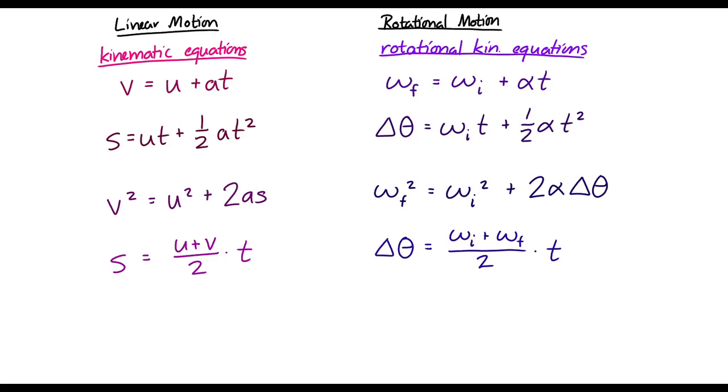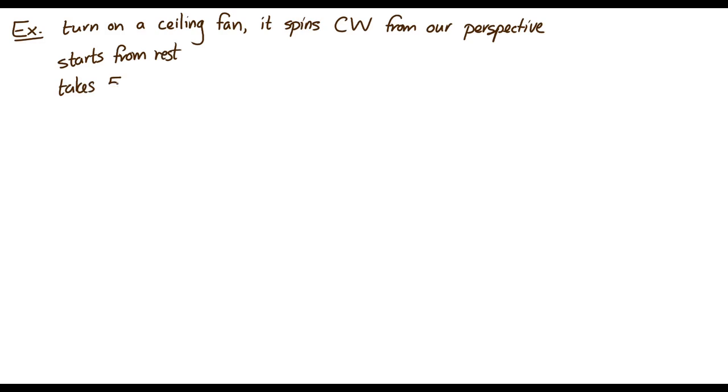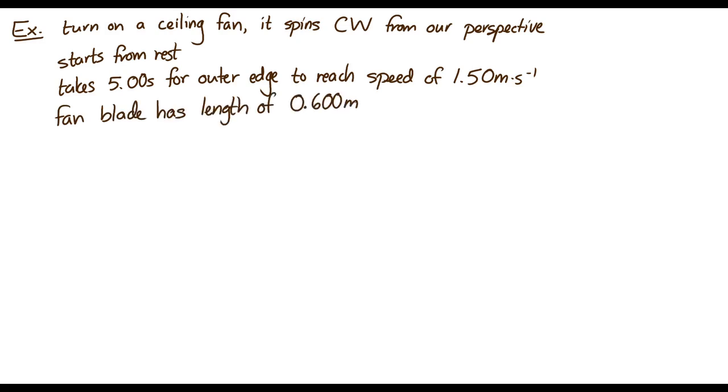So let's try them out. Let's do an example. Let's say we turn on a ceiling fan. And the ceiling fan begins to spin clockwise from our perspective. And it starts from rest. And it takes five seconds for the outer edge to reach a speed of 1.5 meters per second. And the fan blade has a radius of 0.6 meters. And we want to know, what's the angular acceleration of the fan blade? Well, let's see.